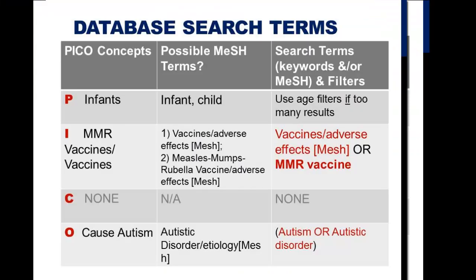Again, there is no comparison in this question. The outcome is causing autism. The MeSH database shows that there is a MeSH term for Autistic Disorder, which you can apply the subheading Etiology to. Ultimately, I've decided instead to search for Autism or Autistic Disorder so that I can catch the keyword and also map to any Autistic Disorder.